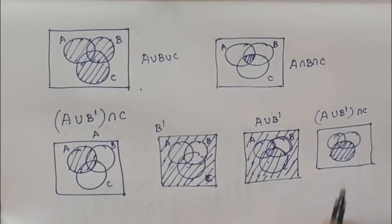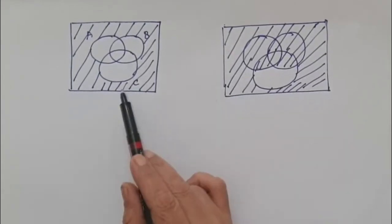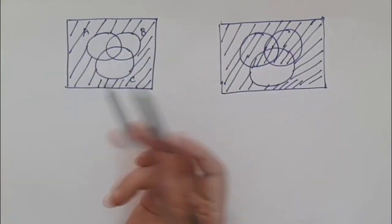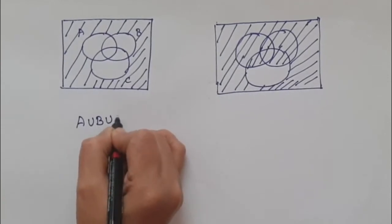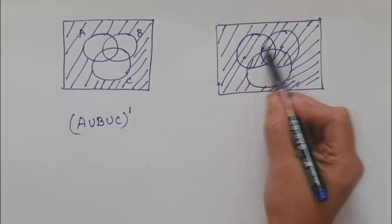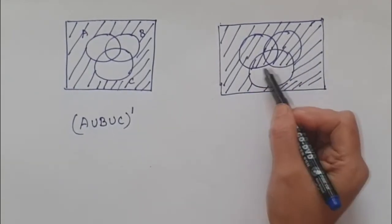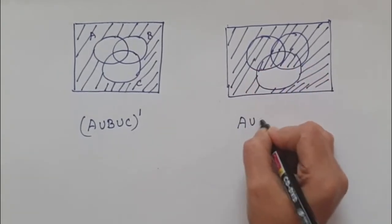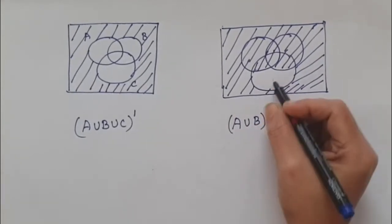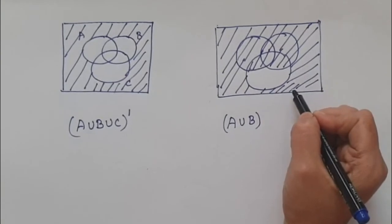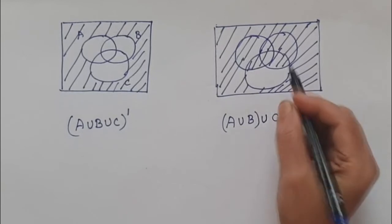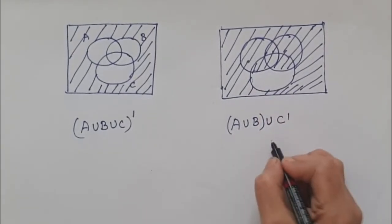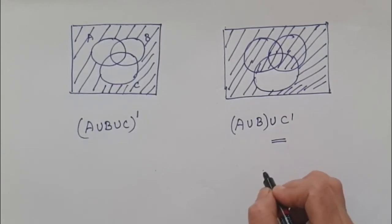Now, if you are given two Venn diagrams, we need to write the symbol for them. The shape which is not shaded is A union B union C, and the outside part — the complement of it — we need to write. So it will be A union B union C, the whole complement. For the other one, A union B is shaded, and if you take circle C, all outside the circle is shaded, so we can write it as C complement with a union. Thus we can draw Venn diagrams as well as write the notations for Venn diagrams. Thank you.